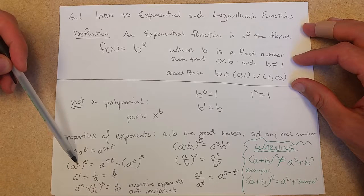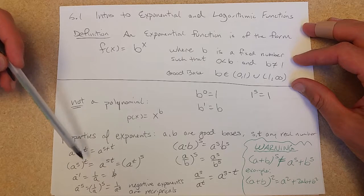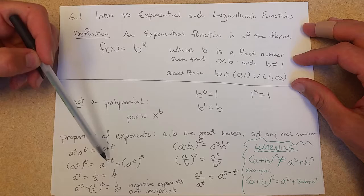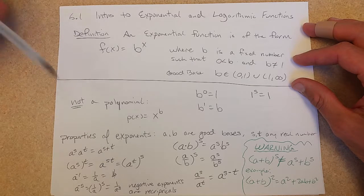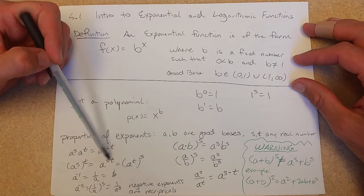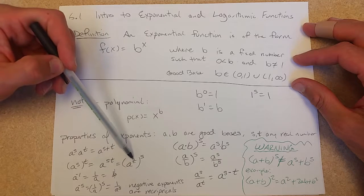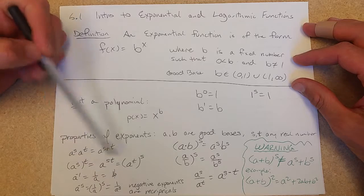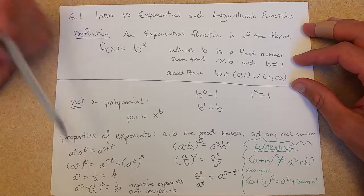a to the s and raise that to the t power. You multiply these exponents together. And of course you could change the order. So you could write it as a to the t times s, which is a to the t to the s. So it's a little bit strange. You can swap the order of the exponents here.